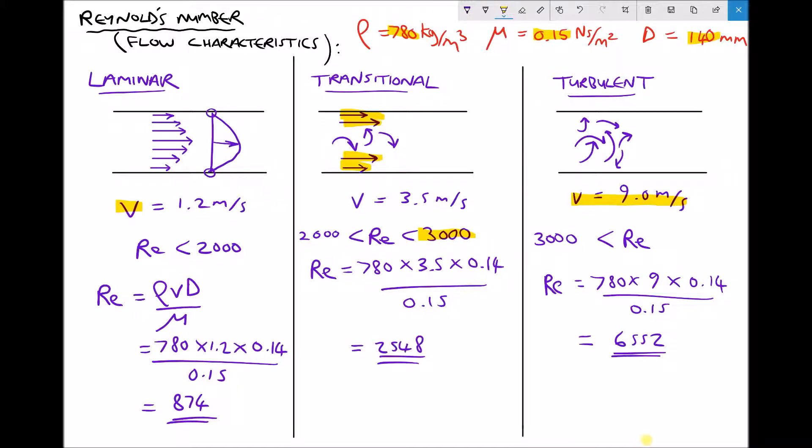In later tutorials, we'll move on to look at pressure losses, and this is largely dependent on the type of flow that we have within a pipe or a duct. So a useful starting point is to understand how to calculate the Reynolds number and how to use that Reynolds number in order to determine the type of flow within the pipe or duct.